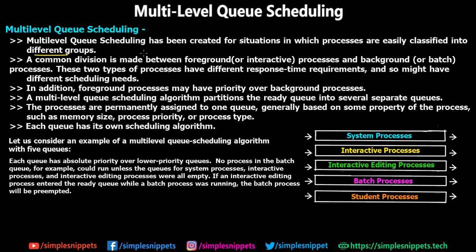Multi-level queue scheduling has been created for situations in which processes are easily classified into different groups. In real-world scenarios, processes are of different types — system-level processes, user-level processes, and different interactive processes. A common division is made between foreground and background processes. For example, on the foreground you're running an application, but in the background you're updating some other application.